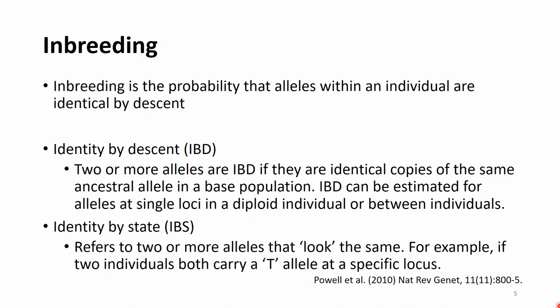There is also a similar term: identity by state, or IBS. This refers to two or more alleles that look the same — they have the same state — but they are not IBD. They are not copies of an ancestral allele; they just happen to be the same allele at the same locus. For example, if two individuals both carry a T allele at a specific locus.